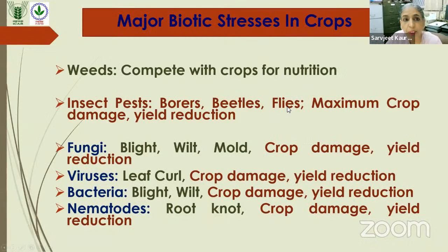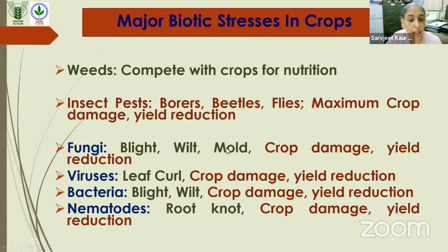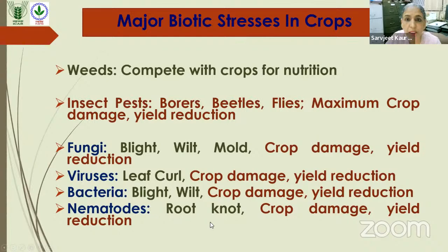The major biotic stresses in crops are weeds, which compete with crops for nutrition, and insect pests, which cause maximum damage and yield reductions. They are of different kinds — commonly called borers, beetles, or flies. Then fungi which cause blight, wilt, or mold kind of diseases, and viruses of different kinds, bacteria and nematodes. Of these, the insect pests are the major biotic stress.